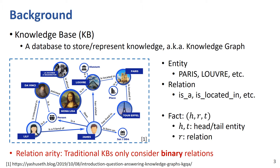Google proposed the concept of knowledge graph in 2014, and since then, the knowledge base has been a hot topic in artificial intelligence. Formerly, the knowledge base is a database to store and represent knowledge with triplet facts. Its main components are the entity and relation. For example, in this knowledge graph, you can find London, Neuzen, and Paris are entities, and they are connected by the relation 'is located in.' However, relations in this figure and traditional knowledge base are all binary relations.